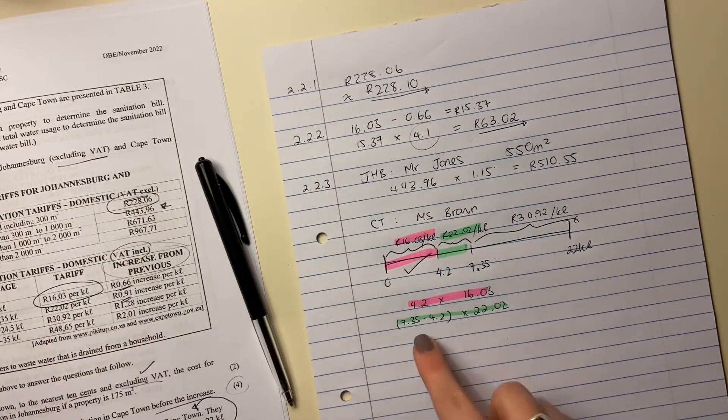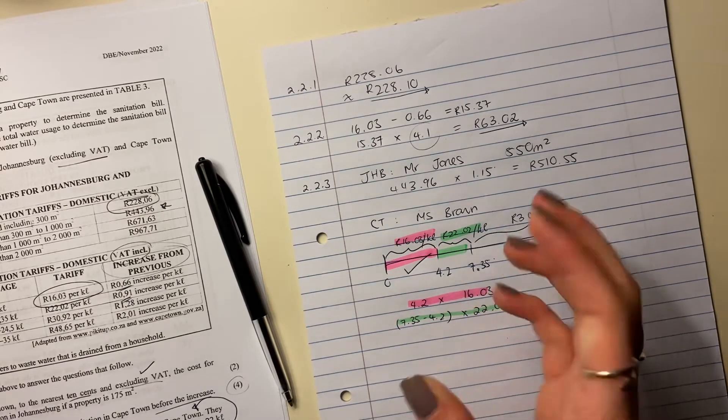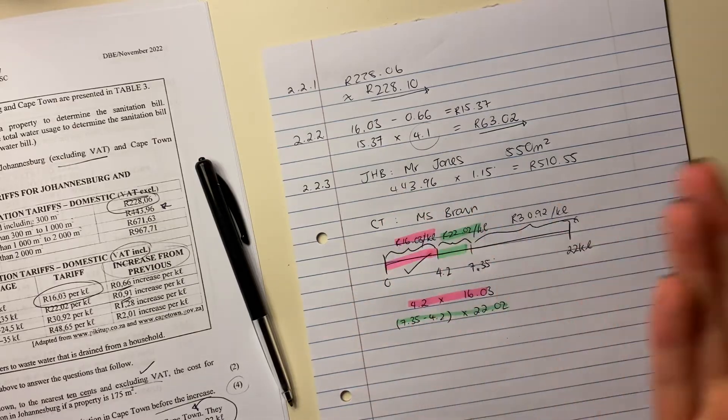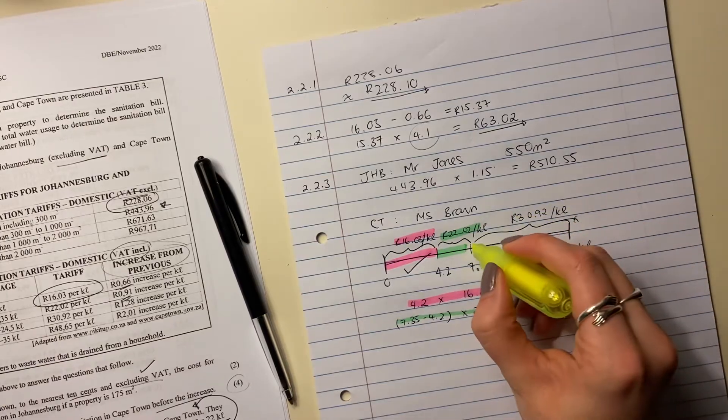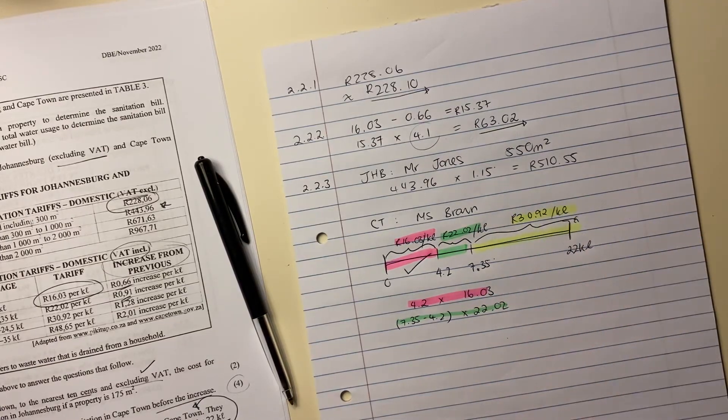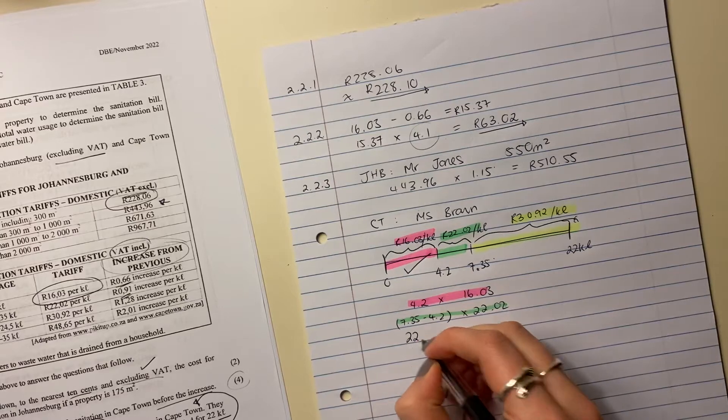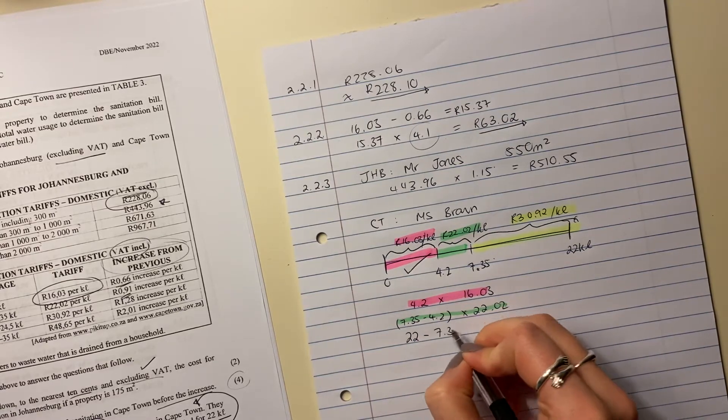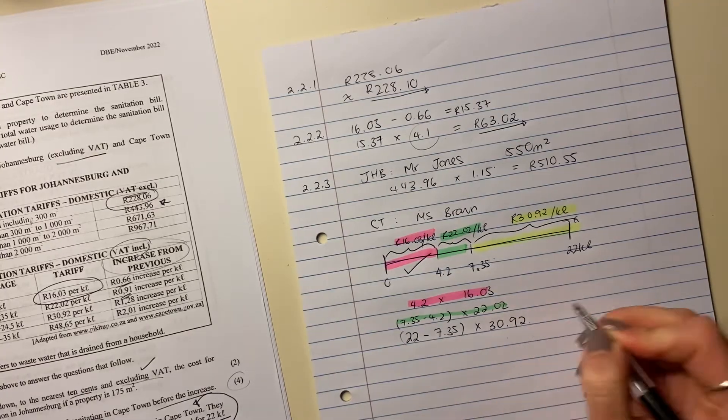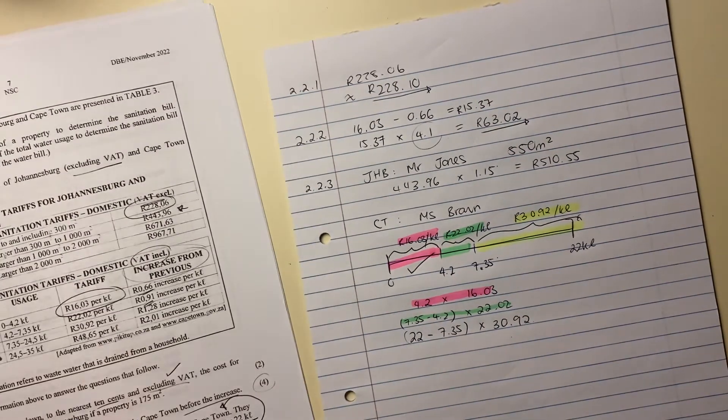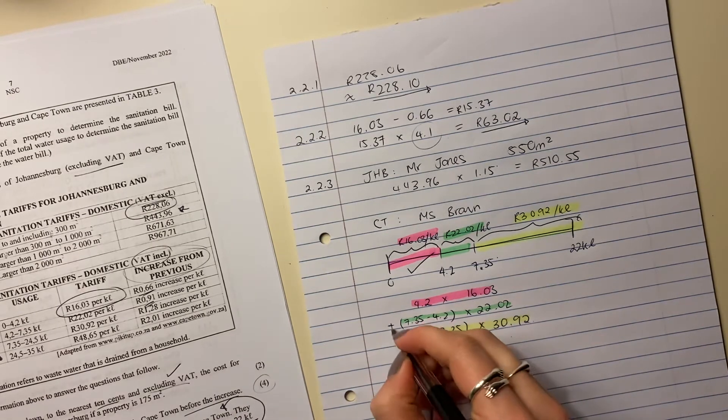So you can't now pay 22.02 on 7.35 kiloliters because the first 4.2, we've already paid for. Remember it's the same thing like with tax. You start paying more as you earn more. You start paying more as you use more sanitation. And that's the last little section here. The last little section, we're going to say 22 minus 7.35 because we've already paid for the 7.35. And we're going to times that by 30.92. We're going to add all of these together.